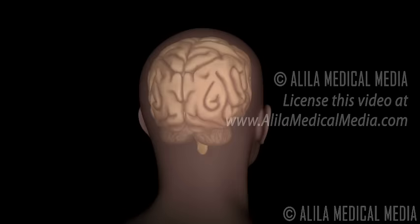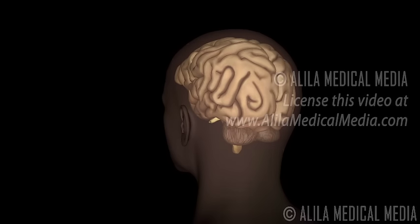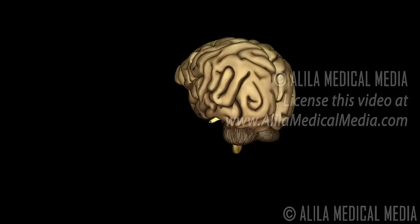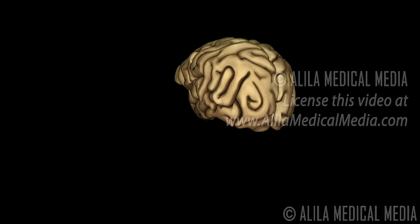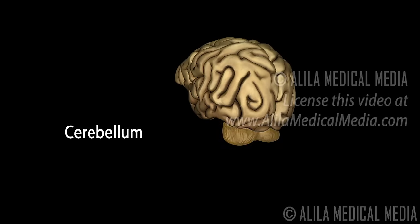The human brain is divided into three major parts. The cerebrum, the largest part of the human brain, enables sensory perception and controls voluntary motor actions.